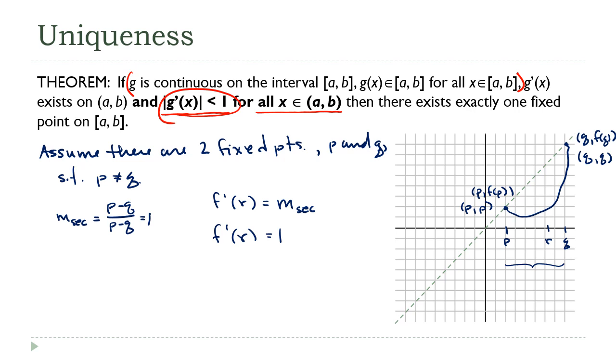All right, so because the existence of two fixed points, two distinct fixed points, would cause a contradiction, that is actually false. So we can say therefore p equals q, and there is therefore only one fixed point on the interval a comma b.